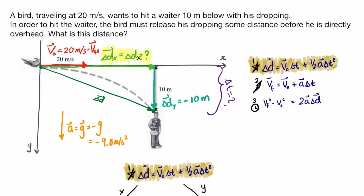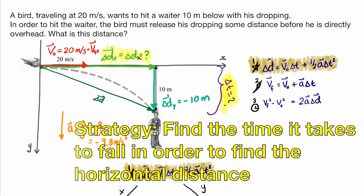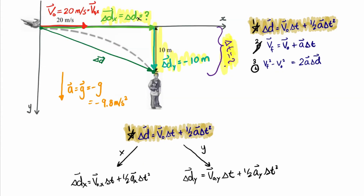In projectile motion, the horizontal and vertical components are independent from one another. The one thing that connects them is that both occur during the same time interval, delta t. A good strategy is to first find the time in one component and use it in the other. Here we'll find the time it takes to drop 10 meters, then use that time to find the horizontal distance covered at 20 meters per second.